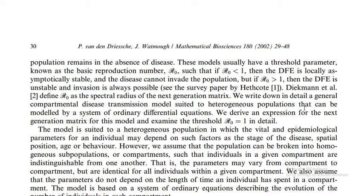We assume that the population can be broken into homogeneous sub-populations or compartments, such that individuals in a given compartment are indistinguishable from one another. For example, total population is divided into susceptible, infectious, and recovered — each being a homogeneous compartment. Parameters may vary from compartment to compartment but are identical for all individuals within a given compartment.